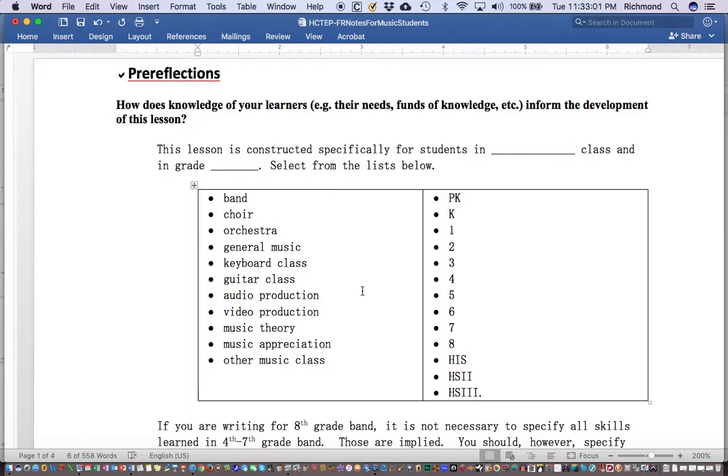Band, choir, orchestra, general music, keyboard class, guitar class, audio production, video production, music theory, music appreciation, or some other music class as is applicable. And in grade, once again you should select from the list below: pre-K, kindergarten, first, second, third, fourth, fifth, sixth, seventh or eighth, or high school one, high school two, and high school three.